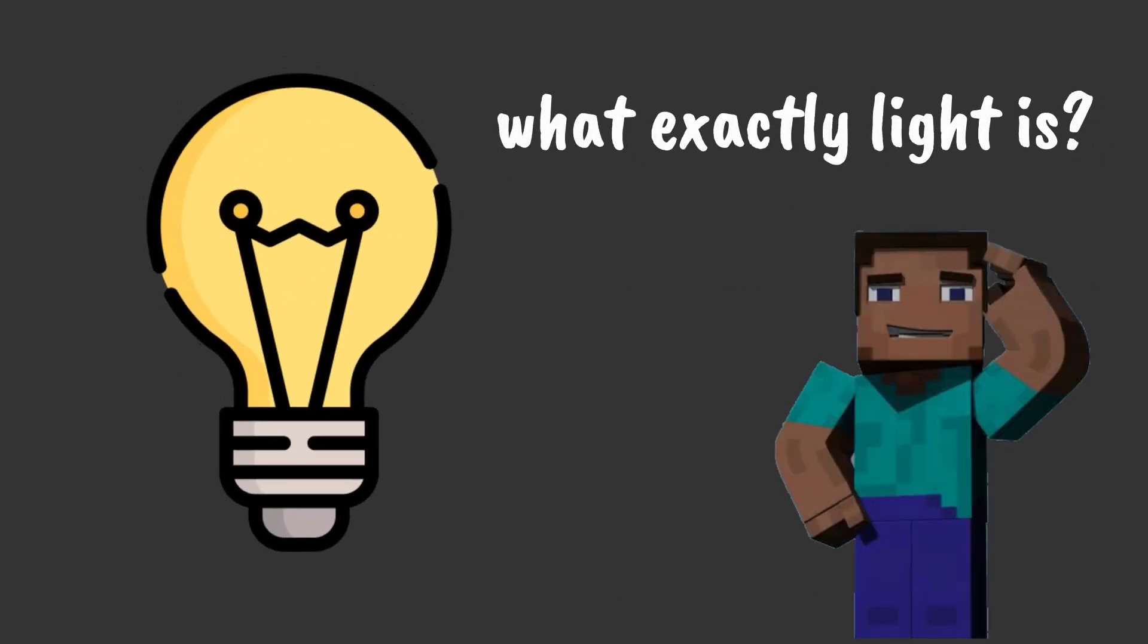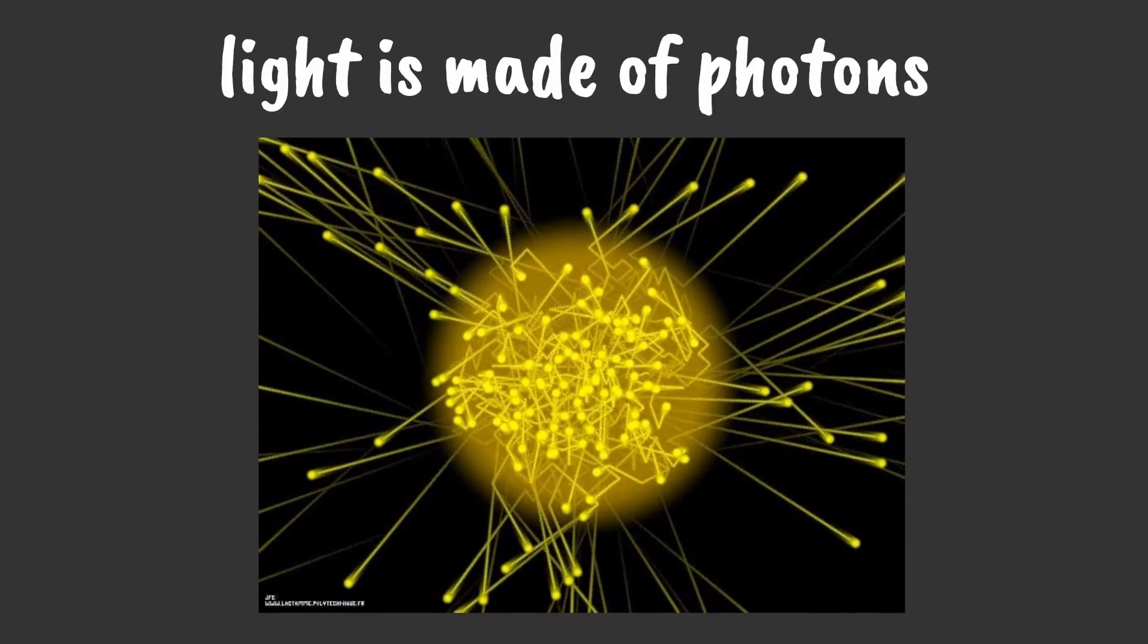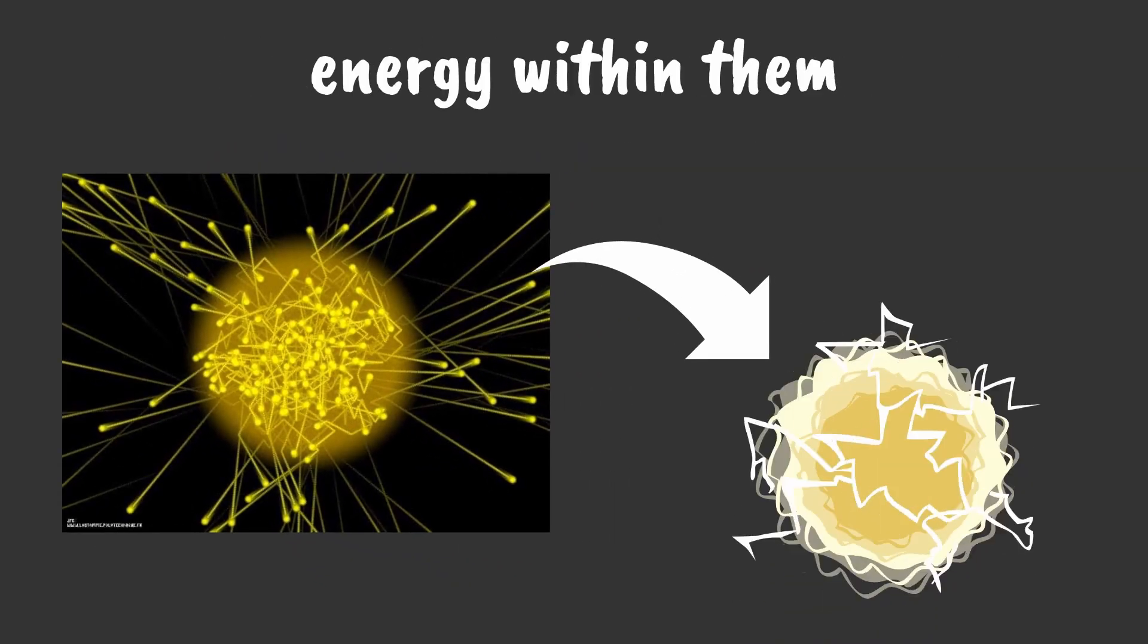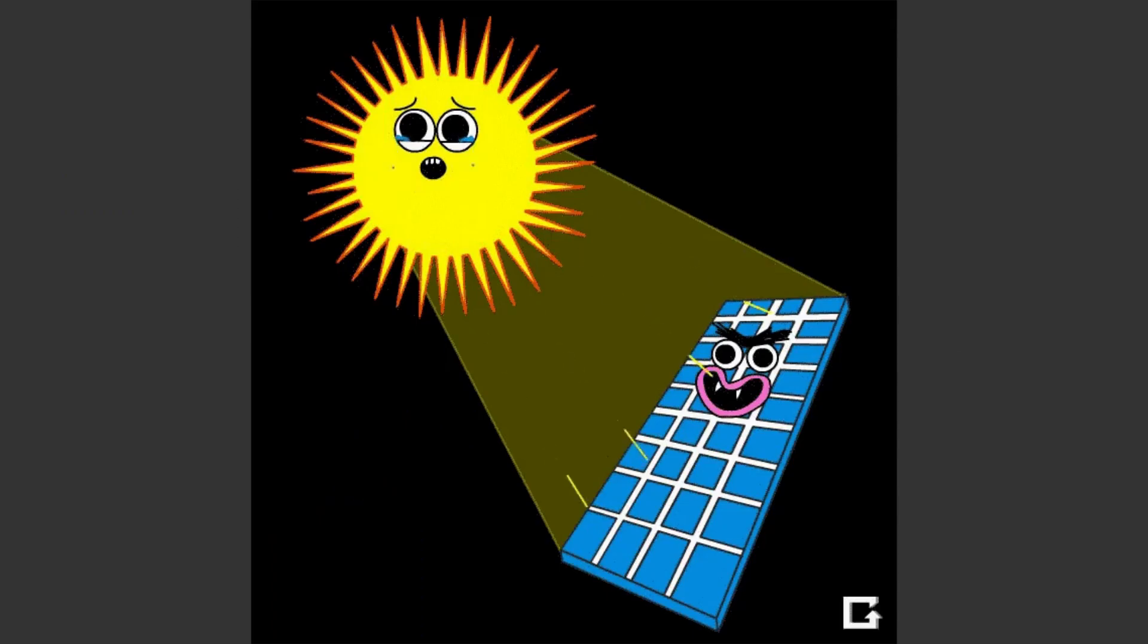But this still doesn't explain why glass is transparent. For that, we have to talk a bit about what exactly light is. As you may know, light is made of photons. These photons each contain energy within them, the same energy that we capture in solar panels.